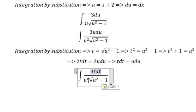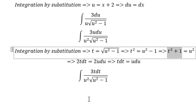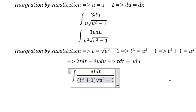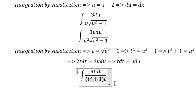We have u squared plus 1. The square root we change to t, so we get the integral of 3tdt over t times t squared plus 1.